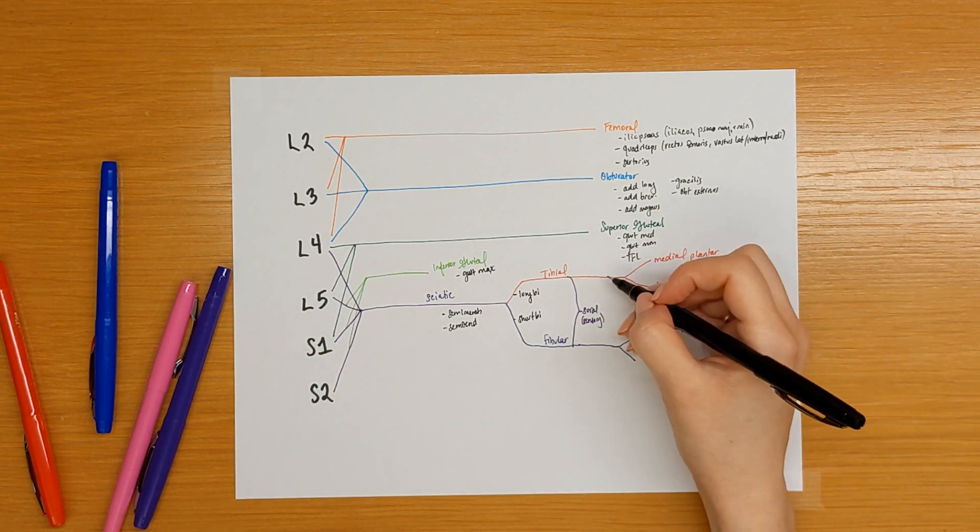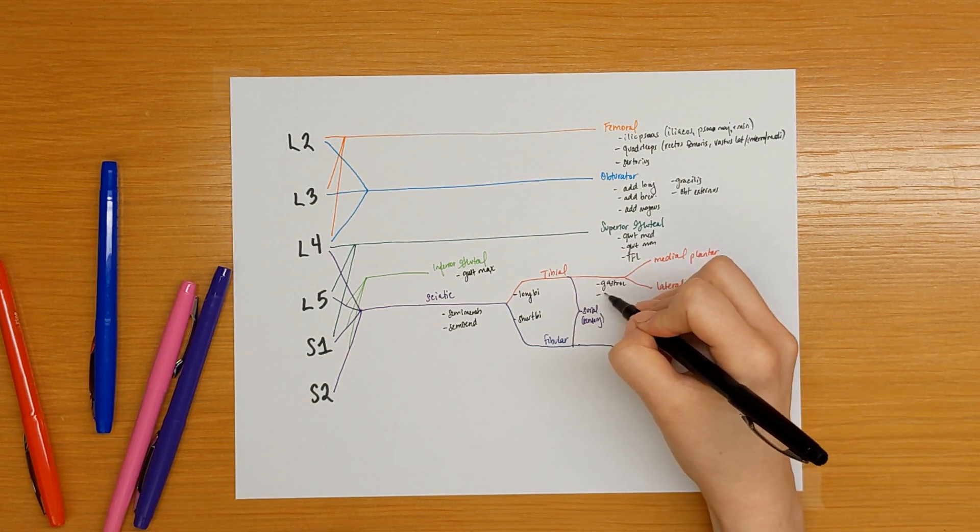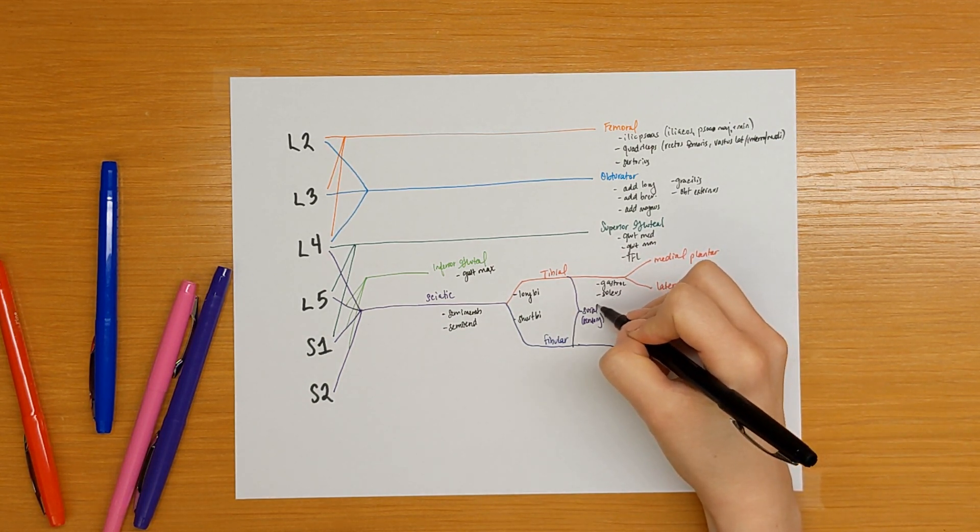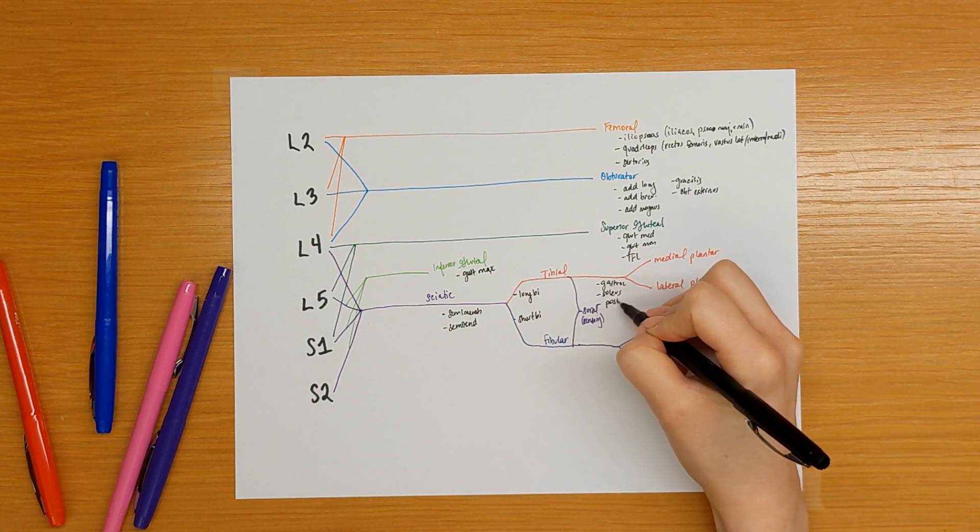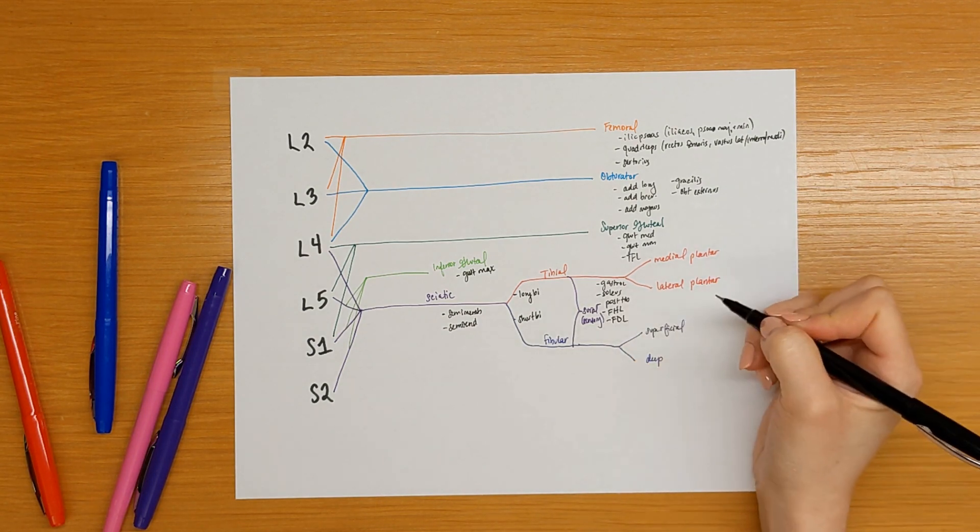The tibial nerve is going to innervate the gastrocnemius, soleus, posterior tibialis, flexor hallucis longus, and flexor digitorum longus.